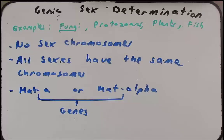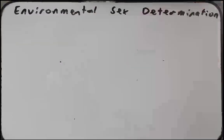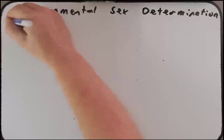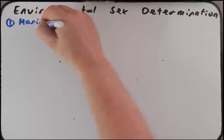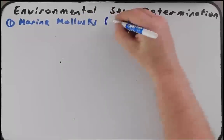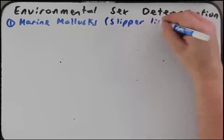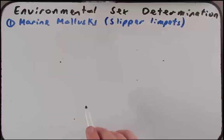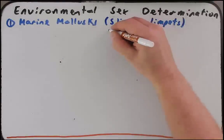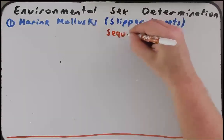Now let's move on to the environmental sex determination system — probably the most interesting of the three types. I want to talk about three examples. The first example focuses on marine mollusks, in particular one commonly referred to as slipper limpets. These will be an example of environmental sex determination and also something we call sequential hermaphroditism.